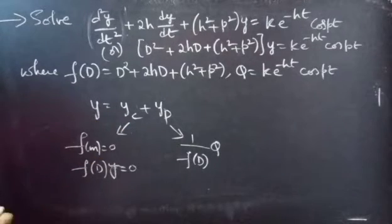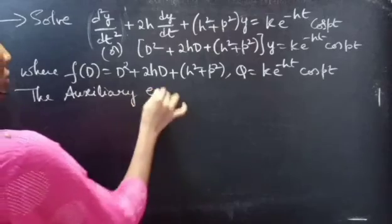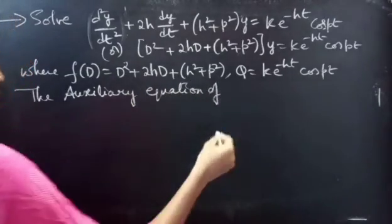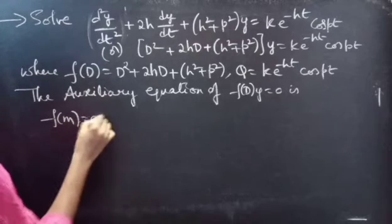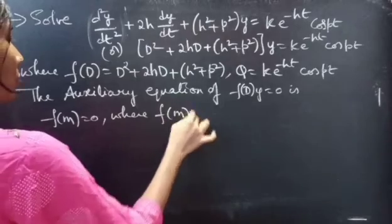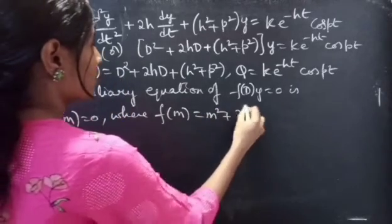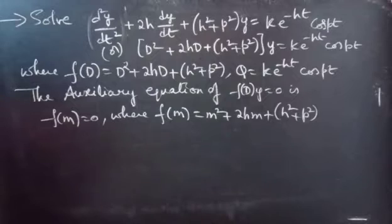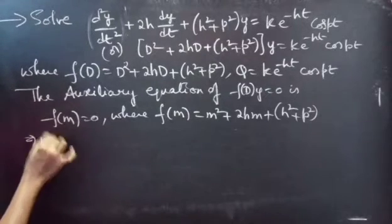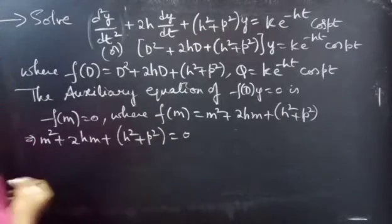Let's begin with yc. We find yc using the auxiliary equation of the homogeneous equation. The auxiliary equation of f(D)·y = 0 is f(m) = 0. We have f(D) = D² + 2hD + h² + p², so just replace D with m to get f(m) = m² + 2hm + h² + p² = 0.